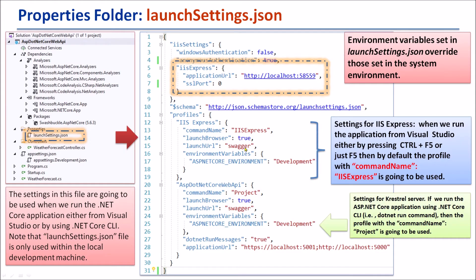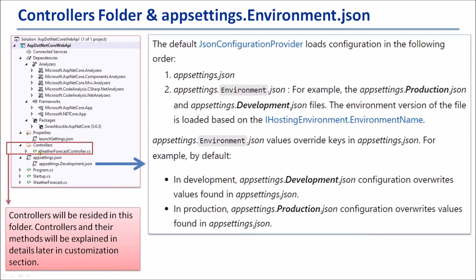The third object is ASP.NET Core Web API. The name of the object is the same as the project name — namely the settings for Kestrel Server. If we run the ASP.NET Core application using the .NET Core CLI, for example the dotnet run command, then the profile with the command name project will be used. Note that if Swagger is installed, the launch URL Swagger will be used. If Swagger is not installed, the application URL will be used.